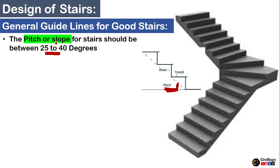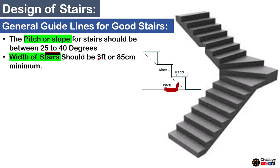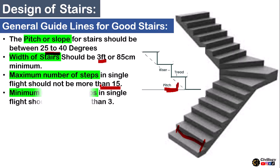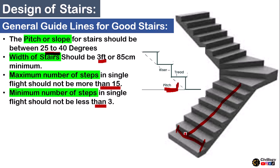The second point is that the width of stairs should be 3 feet or 85 centimeters minimum. The third point is that the maximum number of steps in a single flight should not be more than 15, and the minimum number of steps in a single flight should not be less than 3. A flight is a series of steps in a single row.